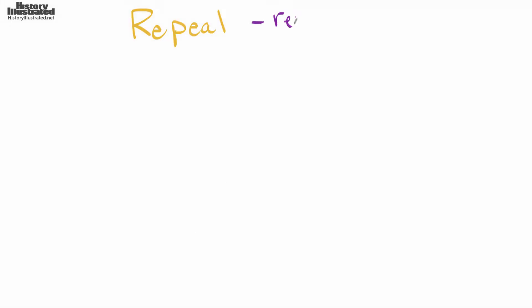In this History Illustrated video we're going to take a look at the vocabulary word repeal. Repeal has a simple definition — it basically means removal or reversal of a law. So it's been removed or reversed; it's been changed.